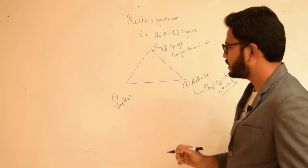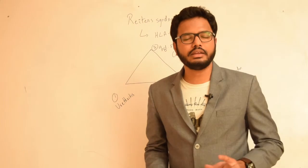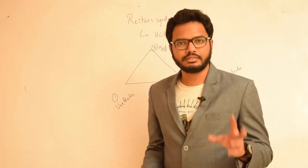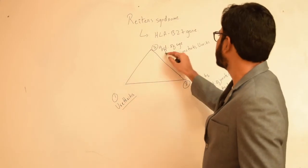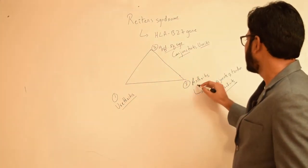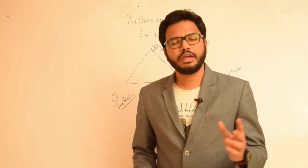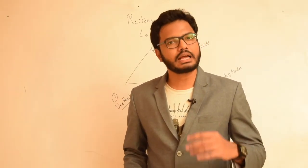These are the classic clinical triad of symptoms which include urethritis, inflammation of eye that is conjunctivitis and uveitis, and arthritis. And we have a mnemonic in order to remember this clinical triad of symptoms.